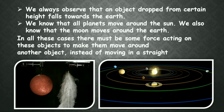Let us discuss some natural things. We always observe that an object dropped from a certain height always falls towards the earth, and also all the planets move around the sun. Moon moves around the earth in a circular path. In all these cases, there must be some force acting on these objects to make them move around another object instead of moving in a straight path.